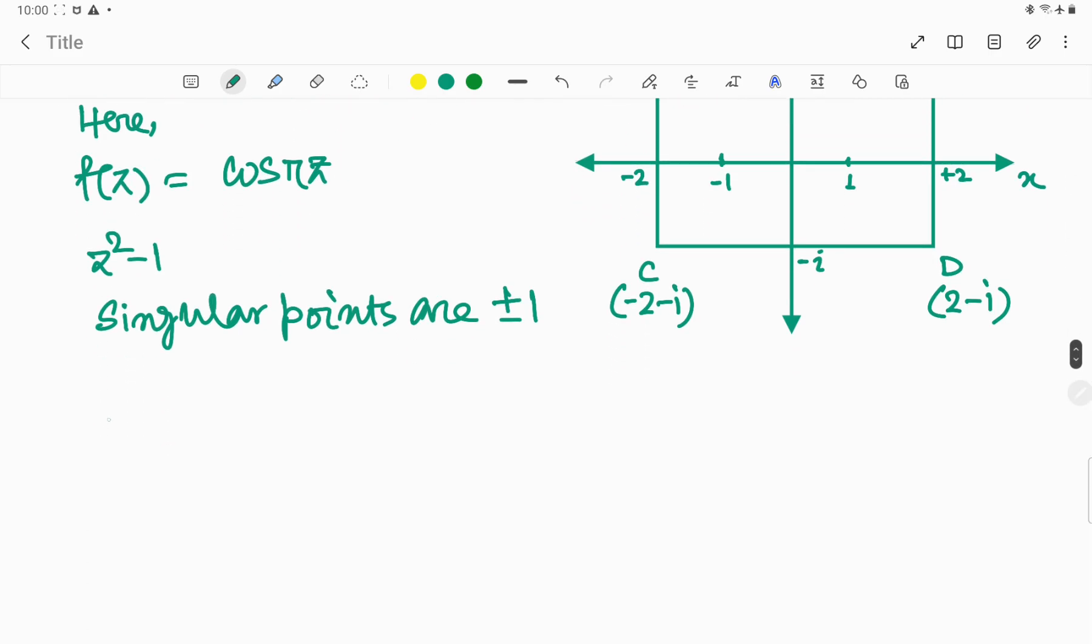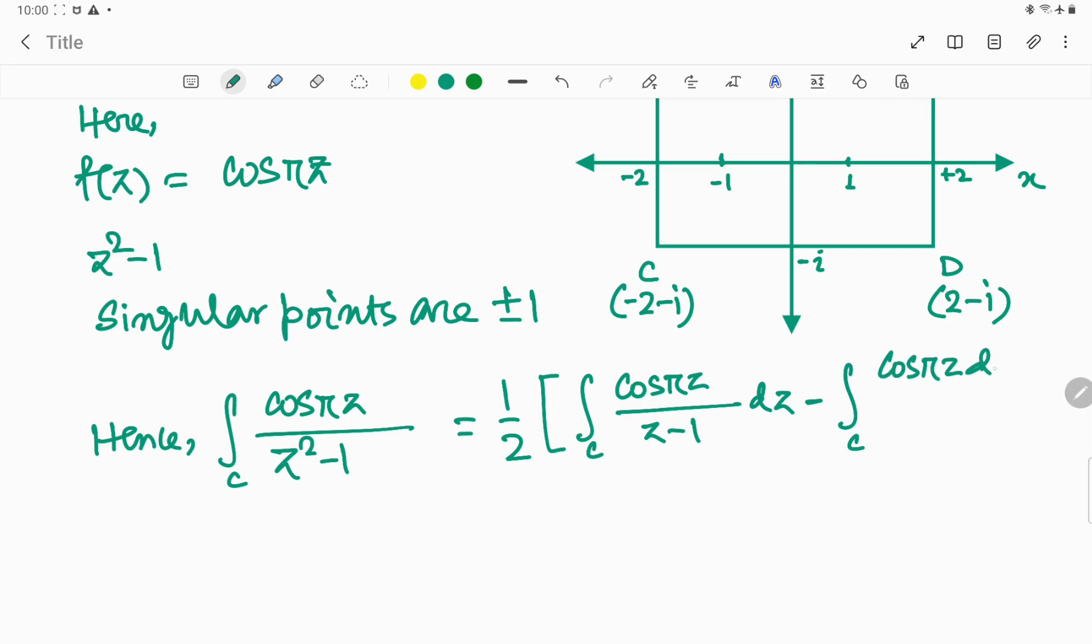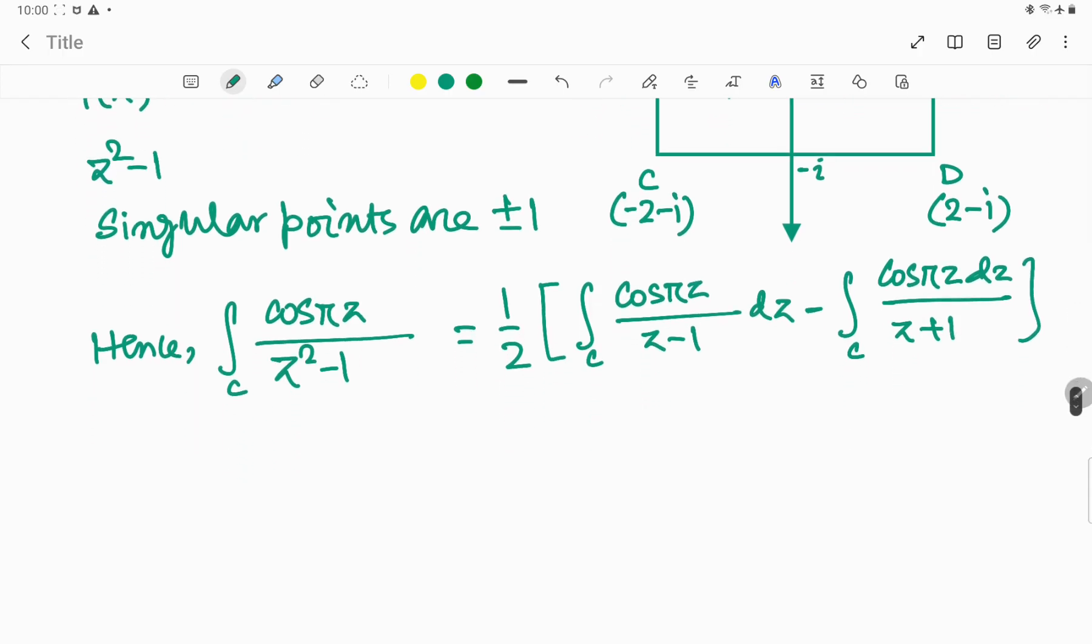Hence we can write... we split this function like this: the integral over C of cos(πz)/(z-1) dz minus the integral over C of cos(πz)/(z+1) dz. Now we try to evaluate this function, it's very easy now.